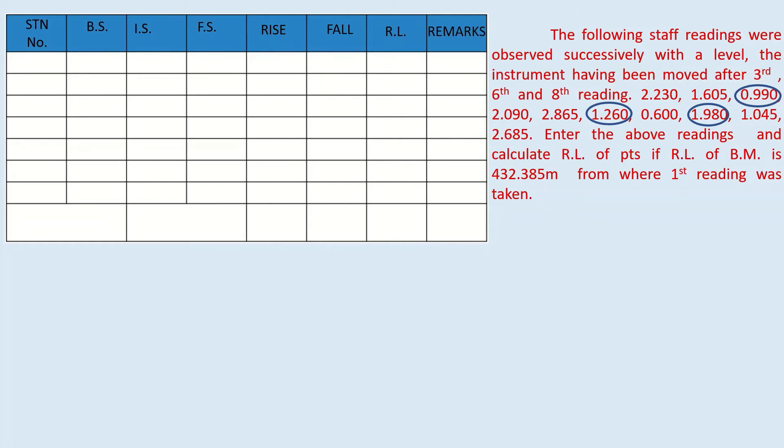Let A be the benchmark. Here the first reading was taken above the benchmark. So it is at back side as it is taken above the station of known RL. With the same position, second reading was taken. Write 1.605 under intermediate side column. Instrument is shifted after third reading. Hence 0.99 is foresight. After foresight, to establish connectivity, back side was taken at the same station. So write 2.090 under back side column. 2.865 is a intermediate side.